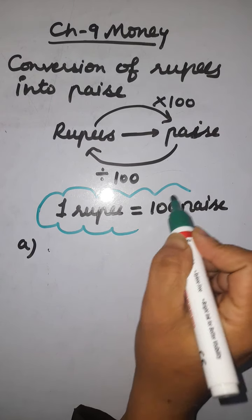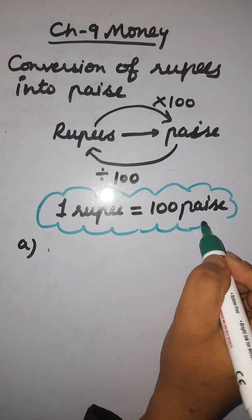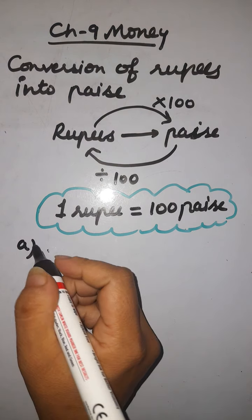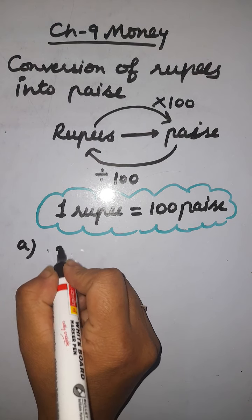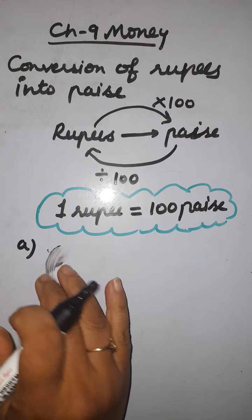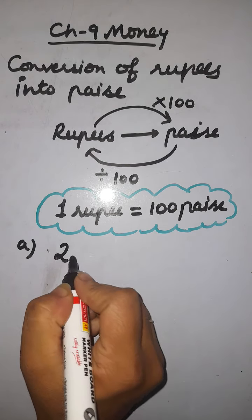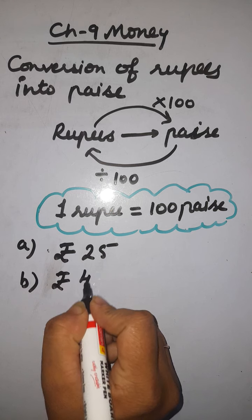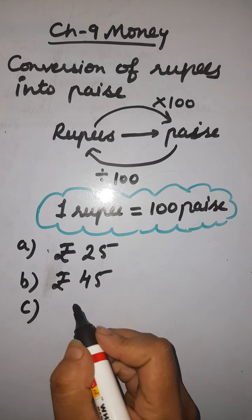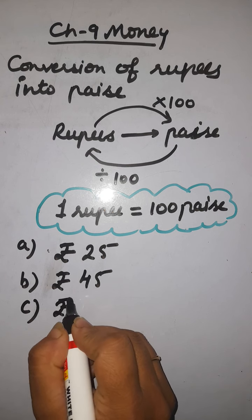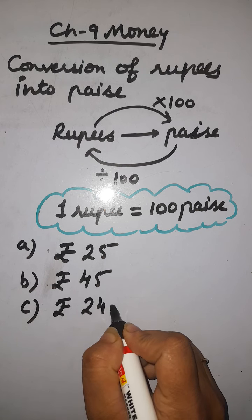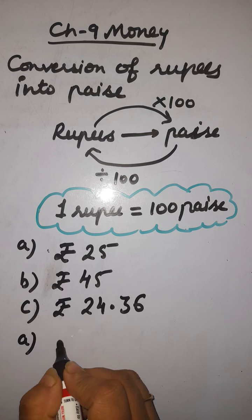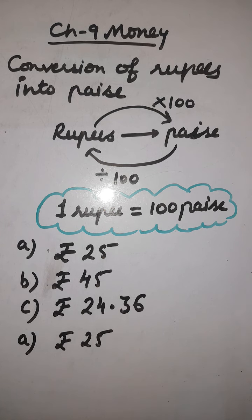1 rupee is equal to 100 paise. You can write it in your maths notebook. Let's take some examples. We have: A — 25 rupees, B — rupees 45, C — rupees 24.36. Let's take the first example, that is rupees 25.